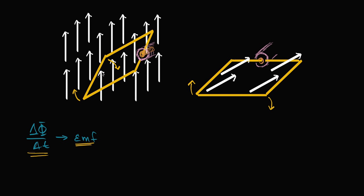Right from this point, as we rotate in this clockwise direction, the component of the magnetic field that is perpendicular to the surface is going to increase.